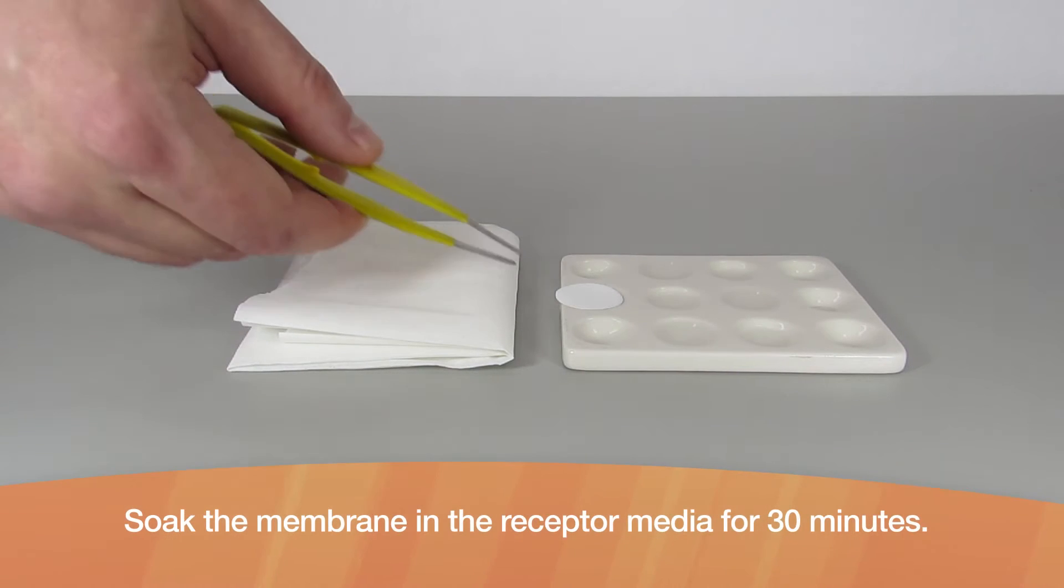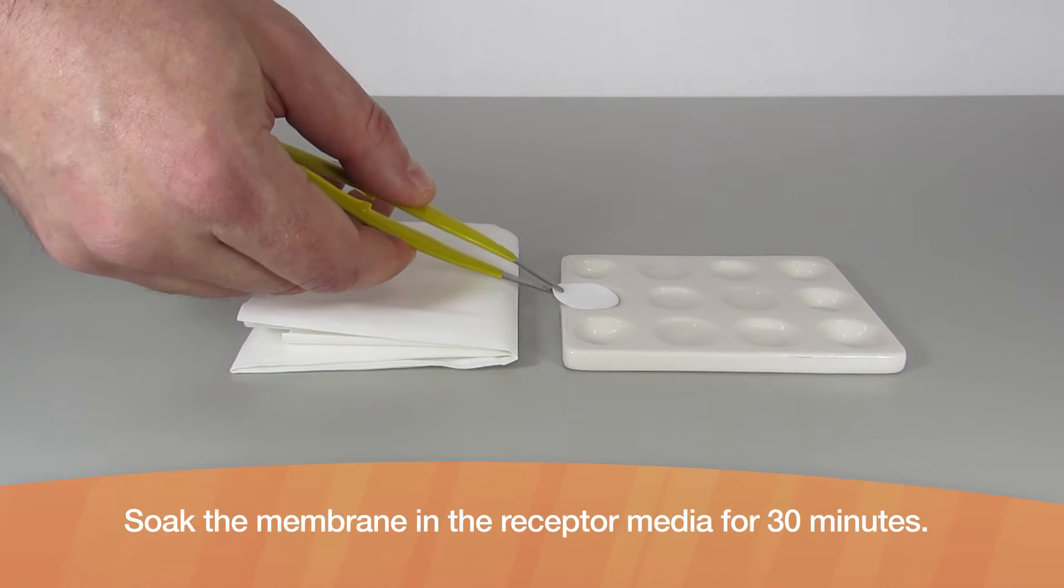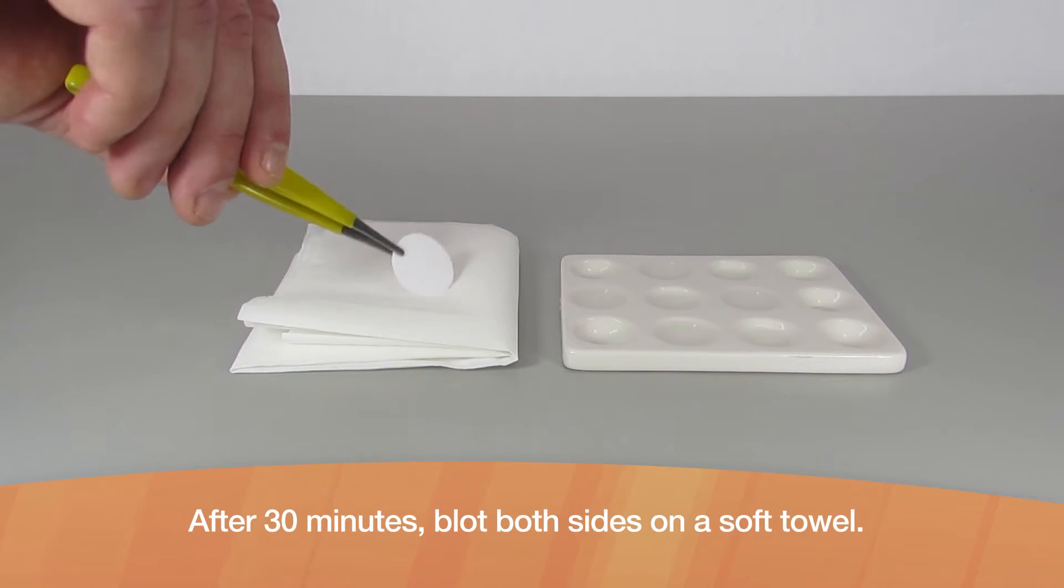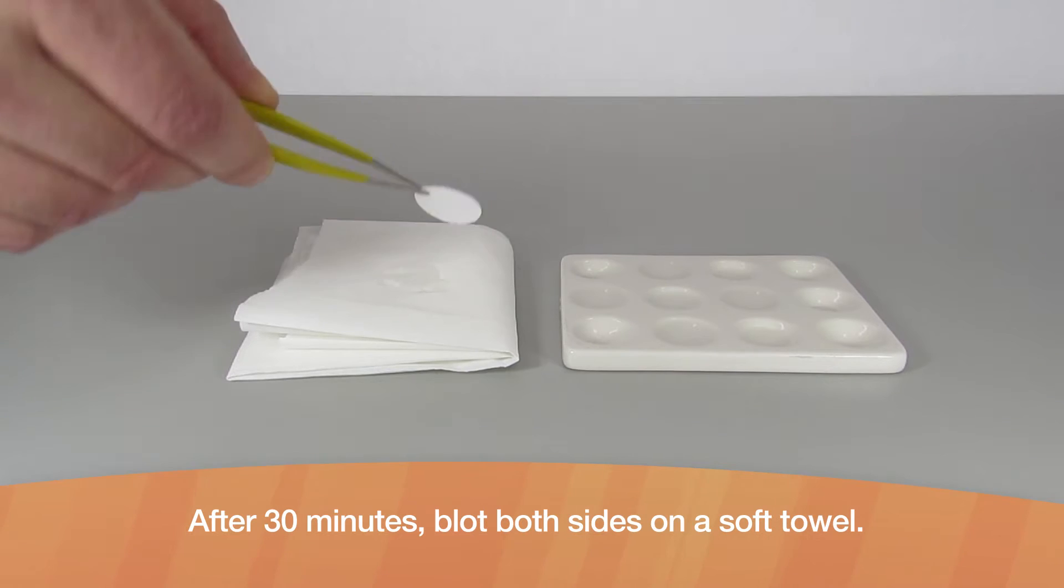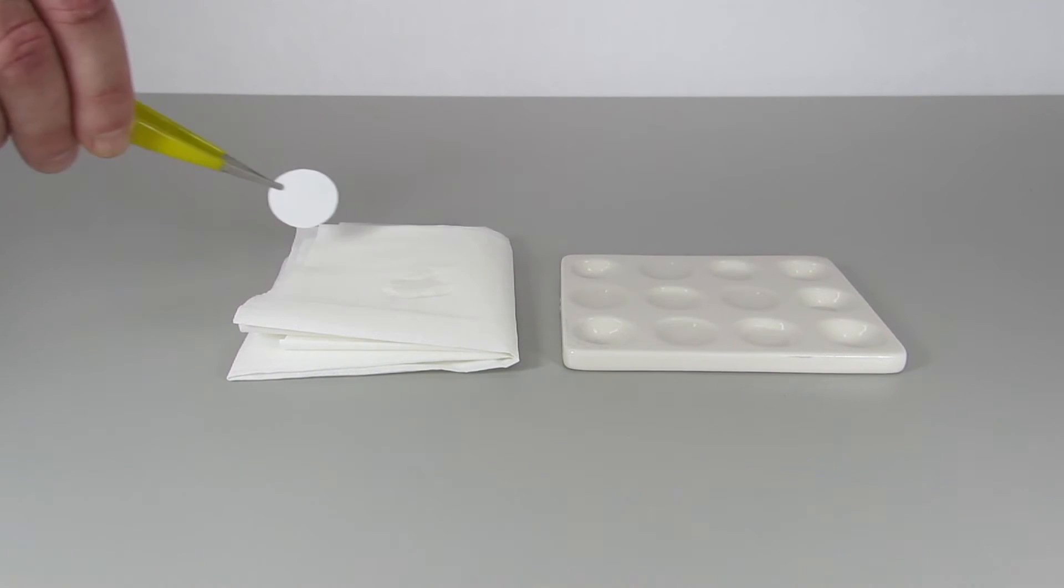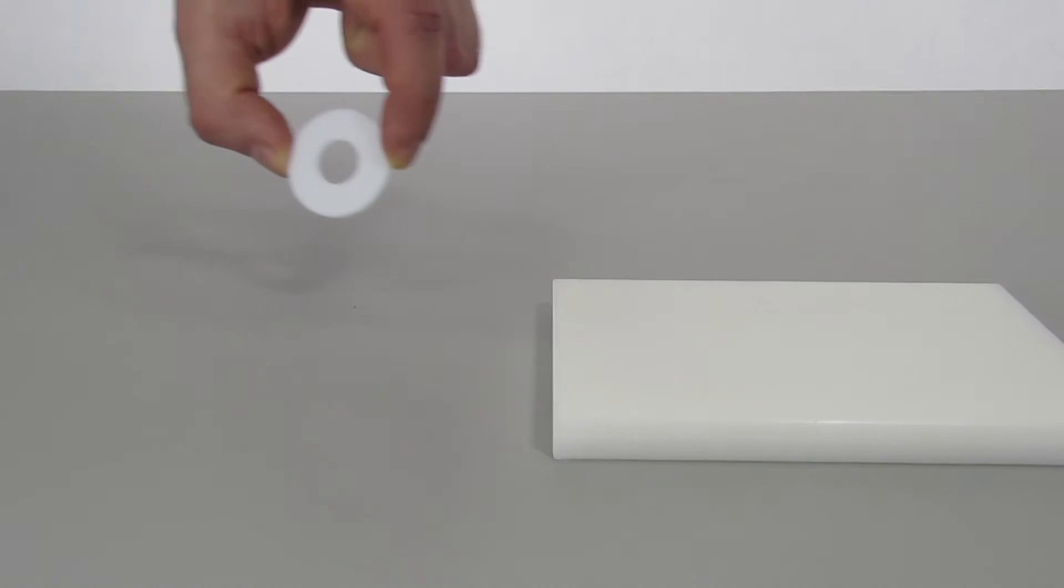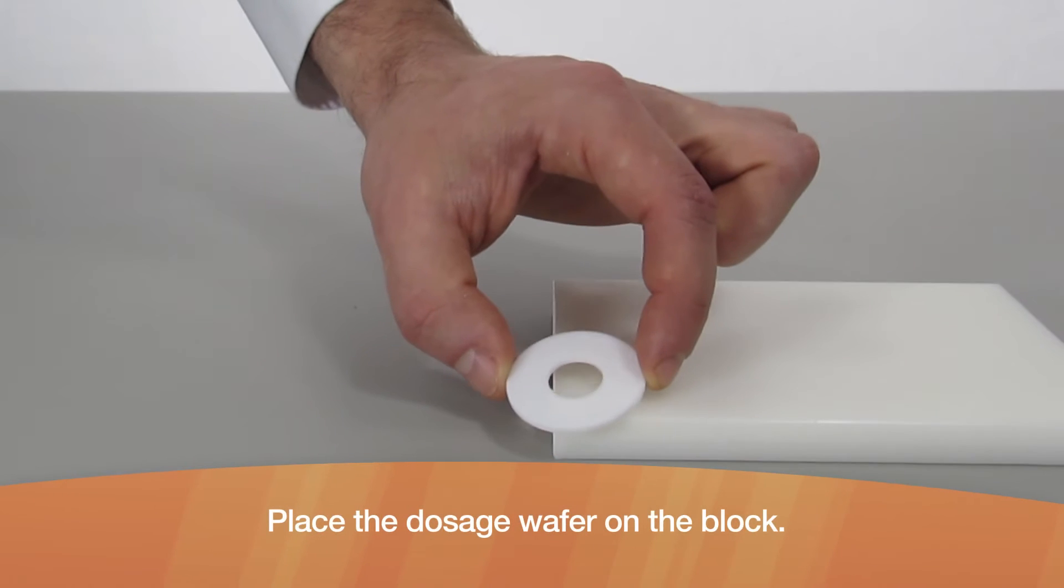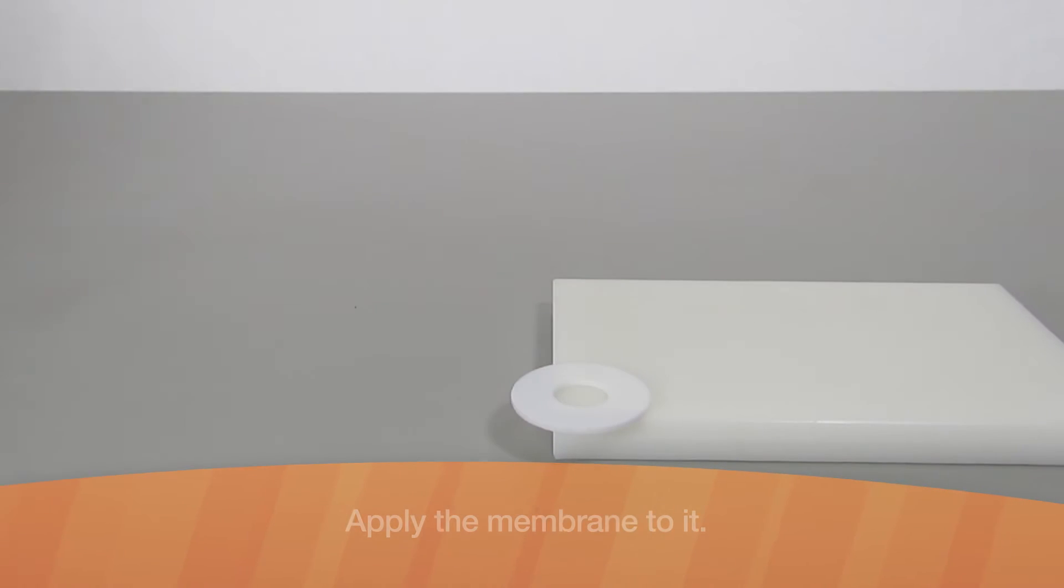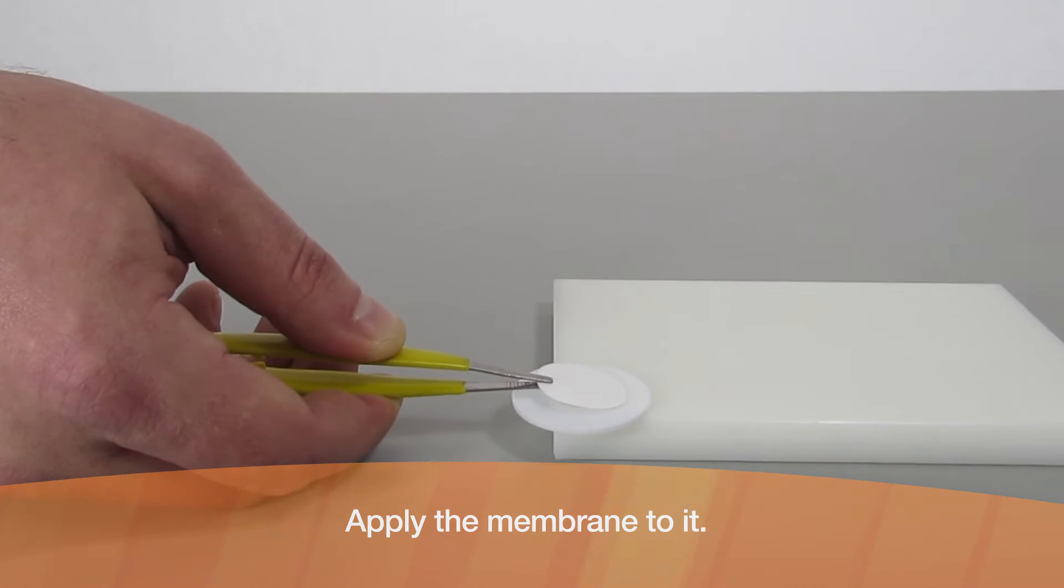Soak the membrane in the receptor media for 30 minutes. After 30 minutes, blot both sides on a soft towel. Place the dosage wafer on the block and apply the membrane to it.